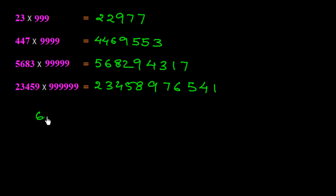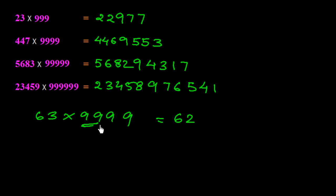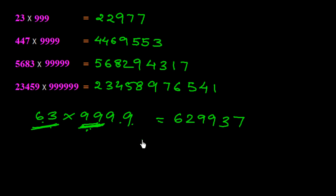One more example: multiply 63 by 9999. Here 63 has 2 digits and 9999 has 4 digits, so the difference is 2. Write 62 (one less than 63) on the left, then place two 9s in the middle, then subtract 63 from 99: 9 minus 6 is 3 and 9 minus 2 is 7, giving 37. The final answer is 629937. Thank you.